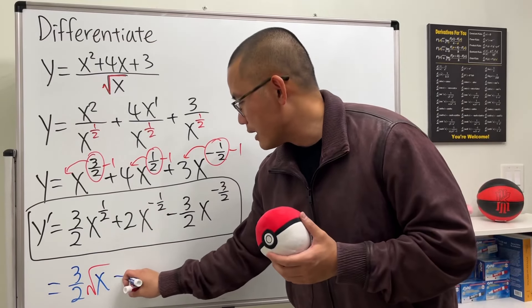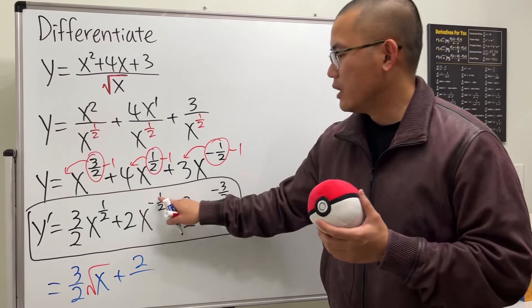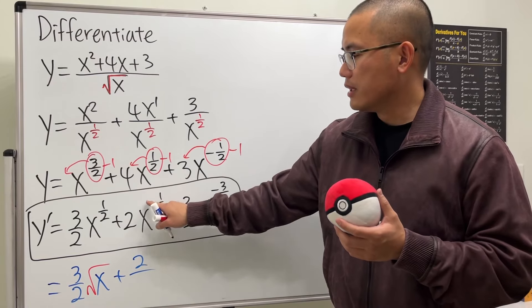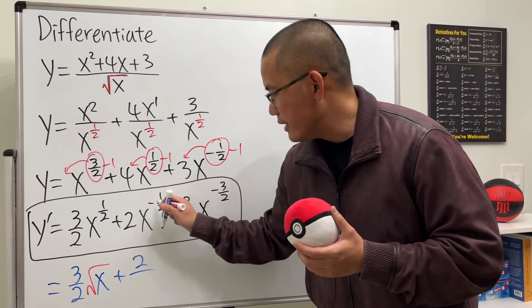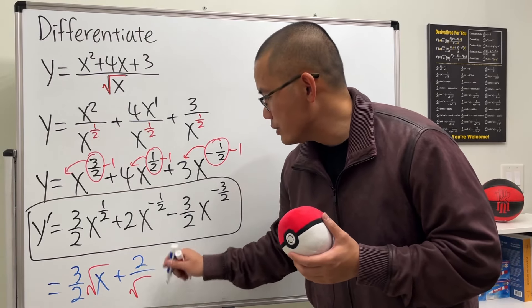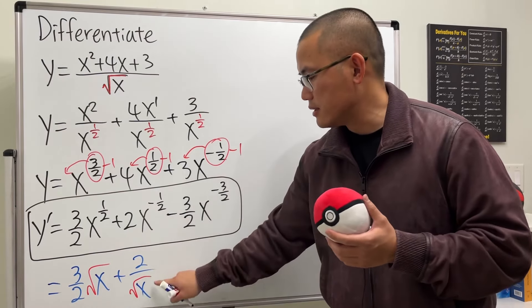Next, we have the plus 2 over. And the reason that we do over is because this is a negative power. So we bring this down to the denominator. And then the 1 half power is the same as the square root. And we have the x.